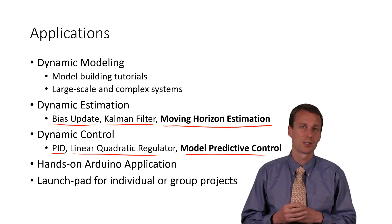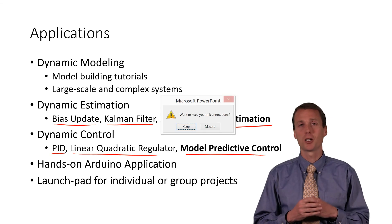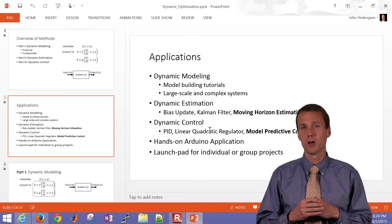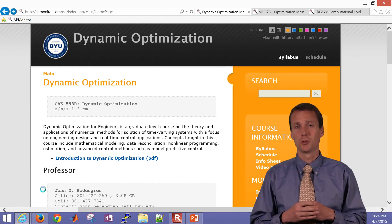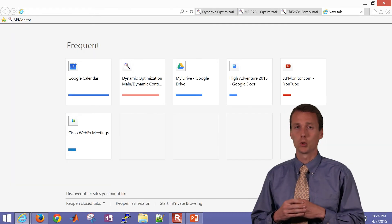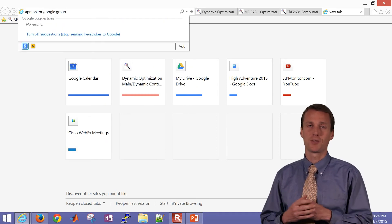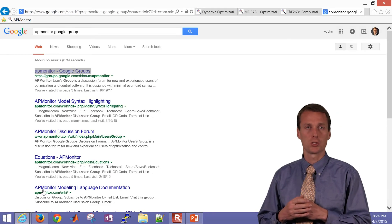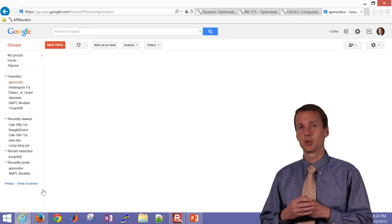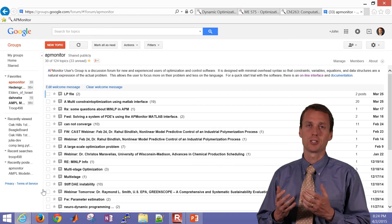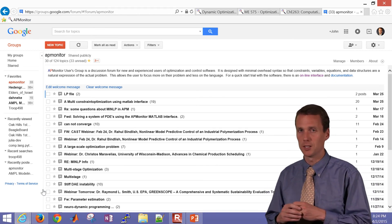Some of the resources to get you started with this class are the course website. It's at apmonitor.com/DO for dynamic optimization. There's also a discussion group, a Google group that you can subscribe to and there will be updates. If you have a question about your particular application, you can send it to the group. It's at apmonitor@googlegroups.com and you'll need to subscribe to that in order to be able to use that list.